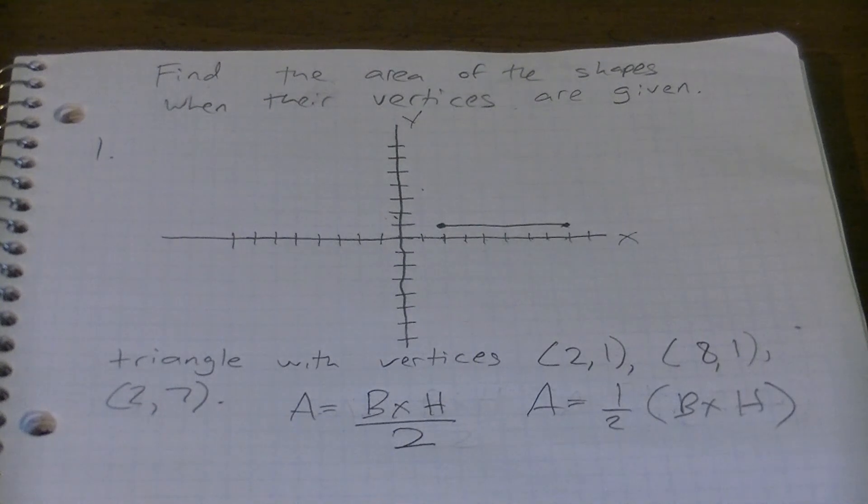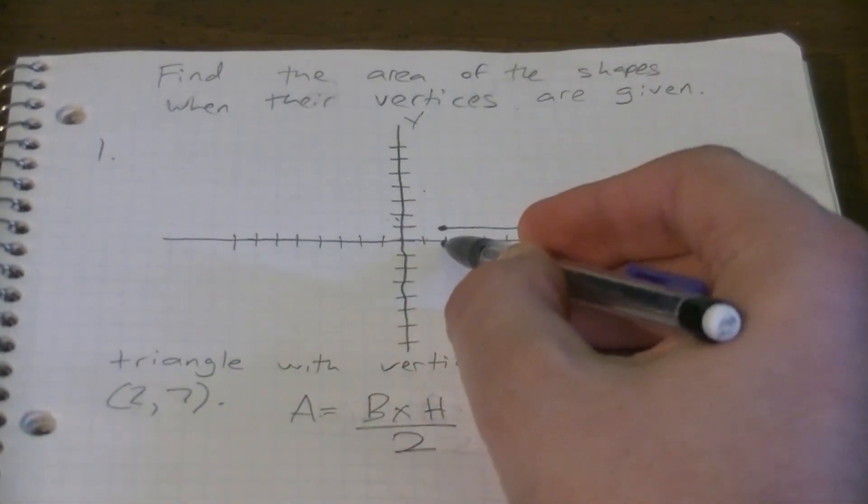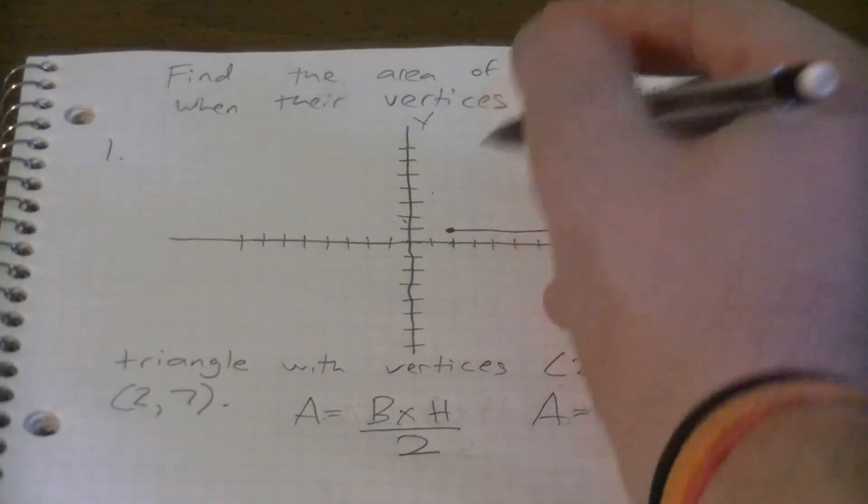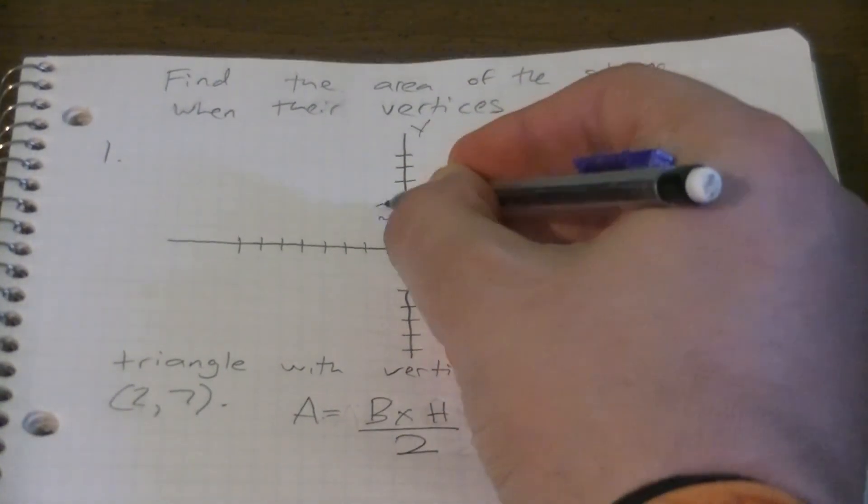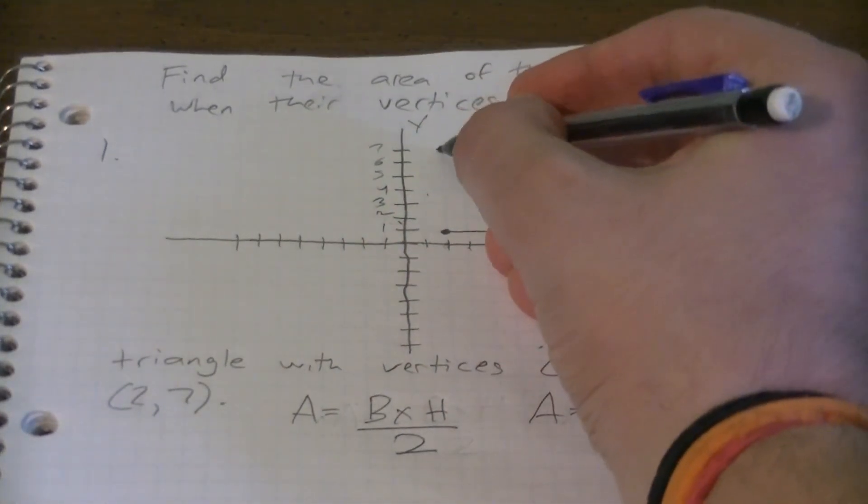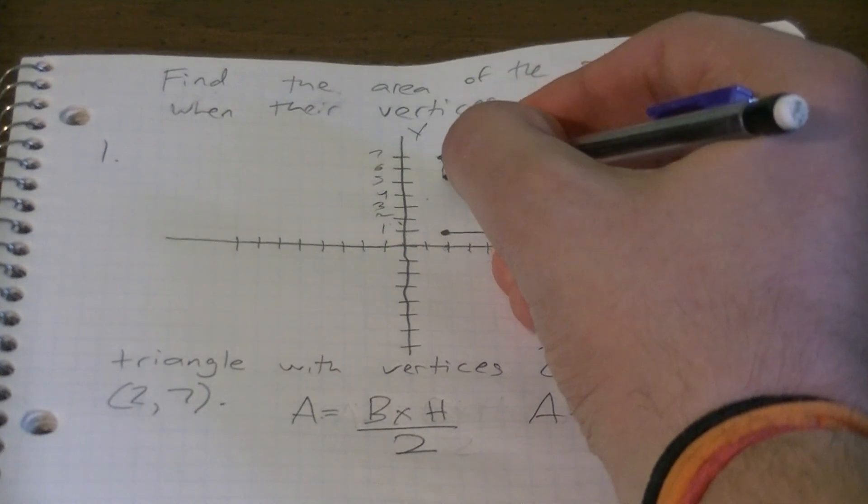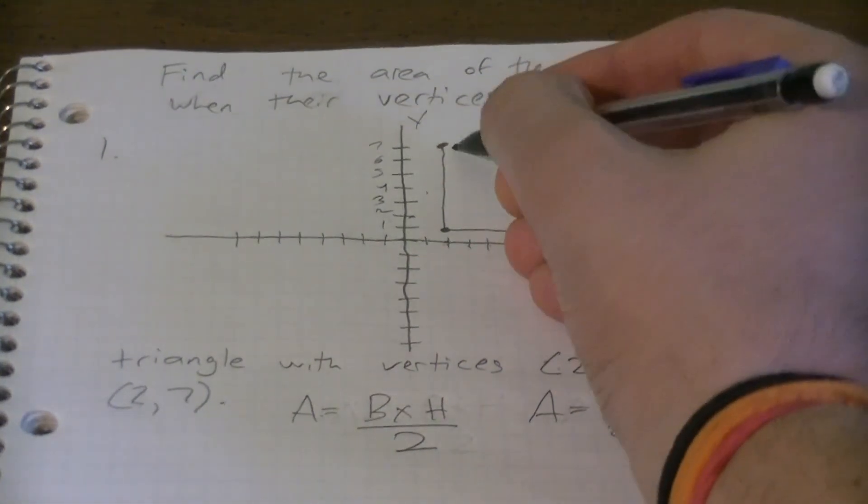We're not done. Our last point (2,7) will give us our triangle. So move over two to the right, then up seven because this is positive: one, two, three, four, five, six, seven. Right here, that's our (2,7). Oh my line's a little crooked. And now we have our triangle.